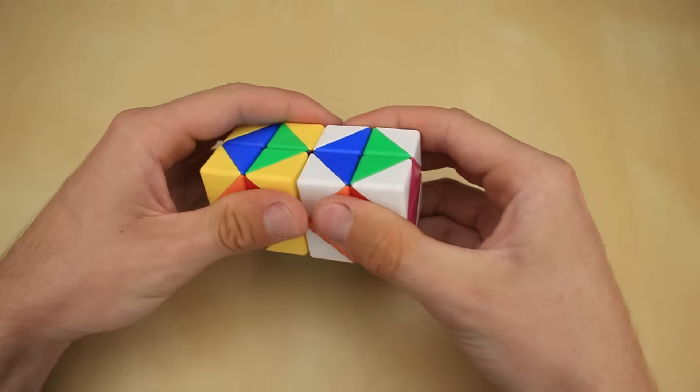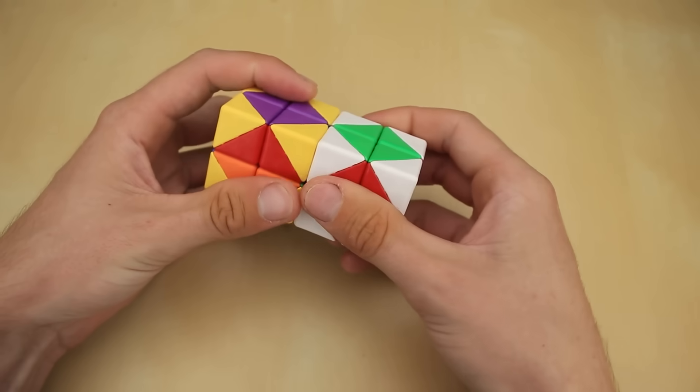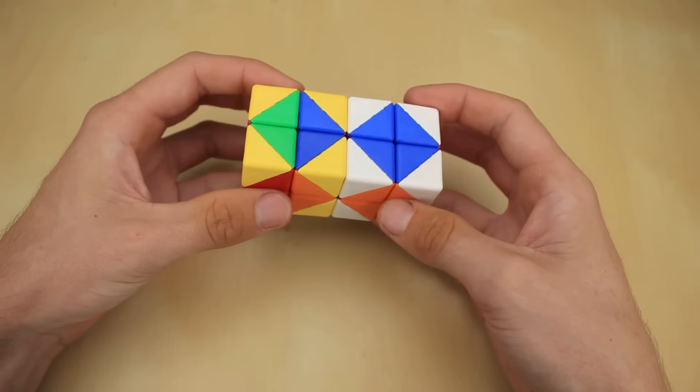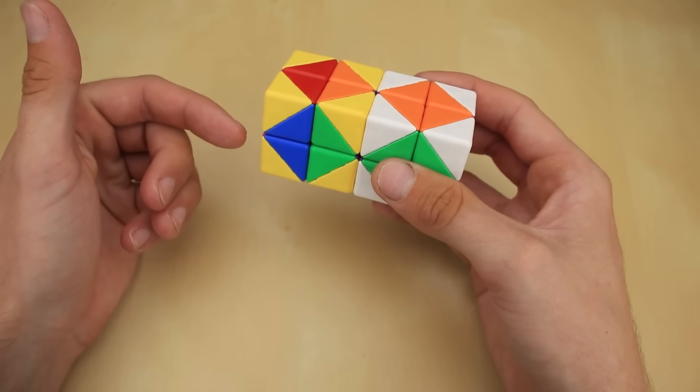We just finish up the cube on the left, and as long as we've done everything correctly along the way, oh no, we have a parity case.